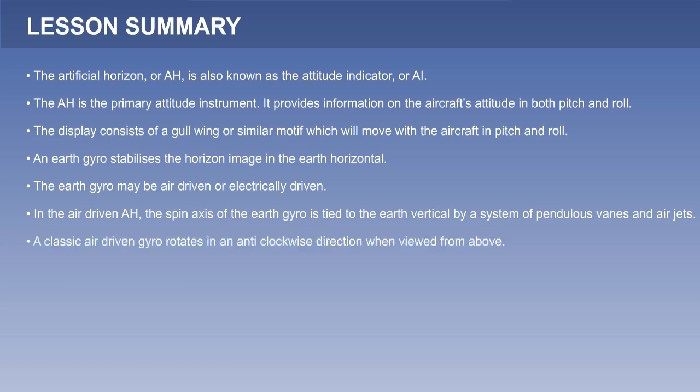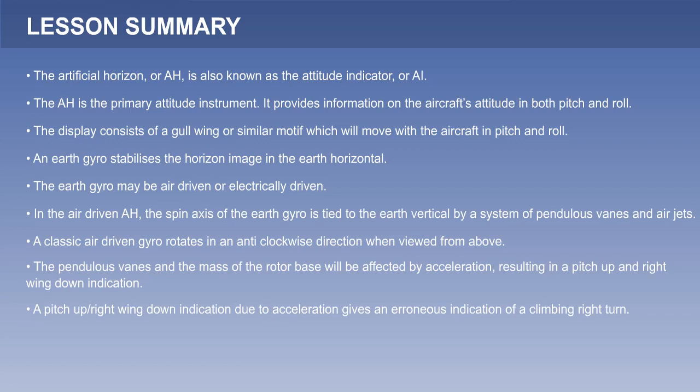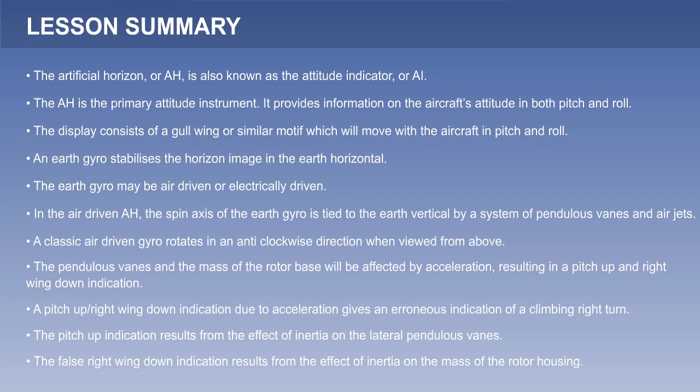A classic air-driven gyro rotates anticlockwise when viewed from above. The pendulous vanes and the mass of the rotor base are affected by acceleration, resulting in a pitch-up and right-wing-down indication — an erroneous indication of a climbing right turn. The pitch-up indication results from inertia on the lateral pendulous vanes, and the false right-wing-down indication results from inertia on the mass of the rotor housing.